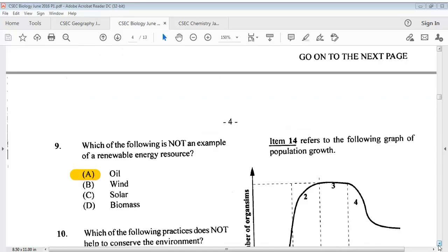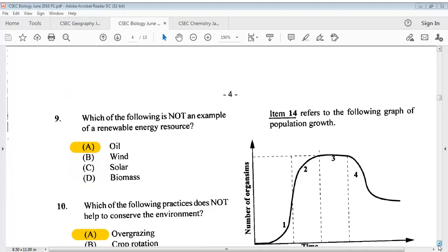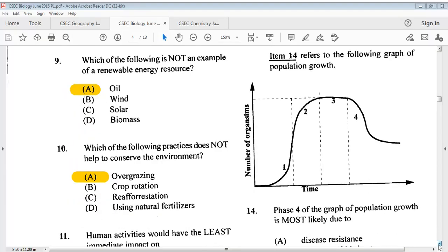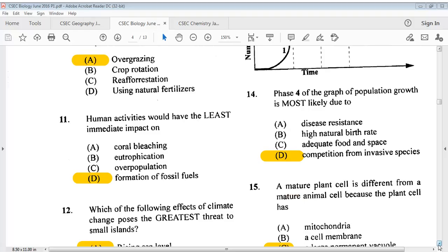Question 9, which of the following is not an example of a renewable energy resource? The answer is A, oil. Question 10, which of the following practices does not help to conserve the environment? The answer is A, overgrazing. Question 11, human activities would have the least immediate impact on? The answer is D, formation of fossil fuels.